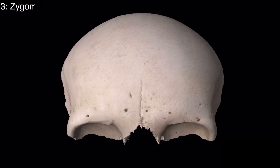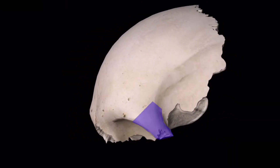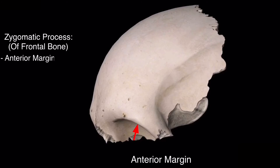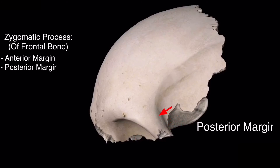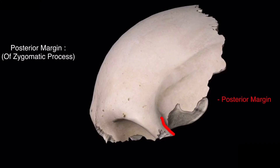Now we come to the zygomatic process. There are two zygomatic processes in the frontal bone, which join with the two zygomatic bones. The zygomatic process has two margins: the anterior margin and the posterior margin. From the posterior margin of the zygomatic process rises the temporal line.